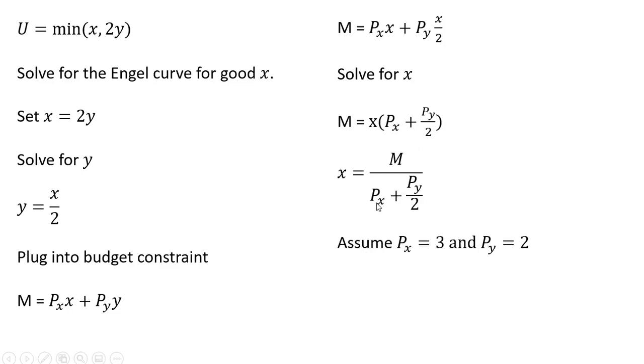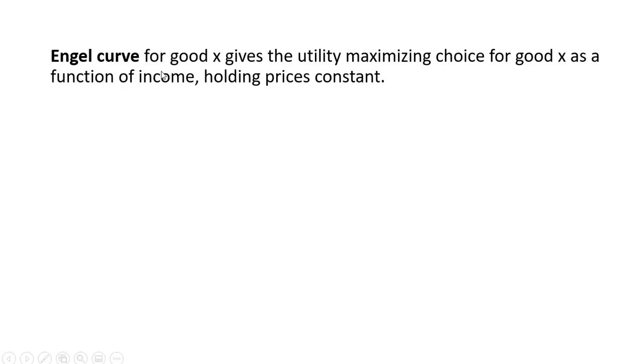Let's assume that the price of good x is $3 and the price of good y is $2. Making those substitutions, we get m divided by 4, and that is the Engel curve. The Engel curve for good x gives a utility maximizing choice for good x as a function of income, holding the prices constant.